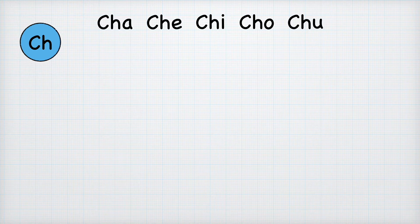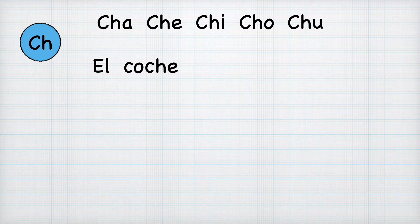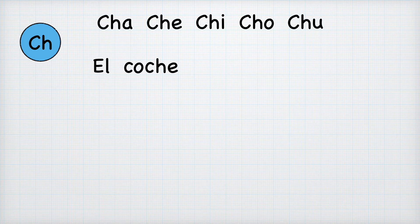Let's practice with some sentences. You can still hear the vowel sounds so it's very important that you know them. Also if you haven't seen the previous classes, the links are going to be on the description. We're using the letters that we've learned from those classes to create sentences.